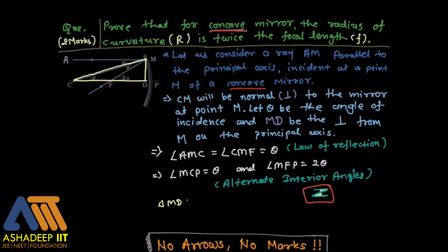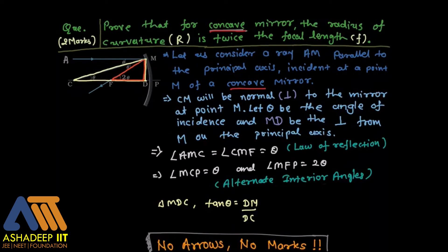Now focusing on triangle MDC: tan theta equals DM divided by DC — opposite over adjacent. Similarly in triangle MDF: tan 2 theta equals DM divided by DF. These are equation 1 and equation 2 which we will use later.